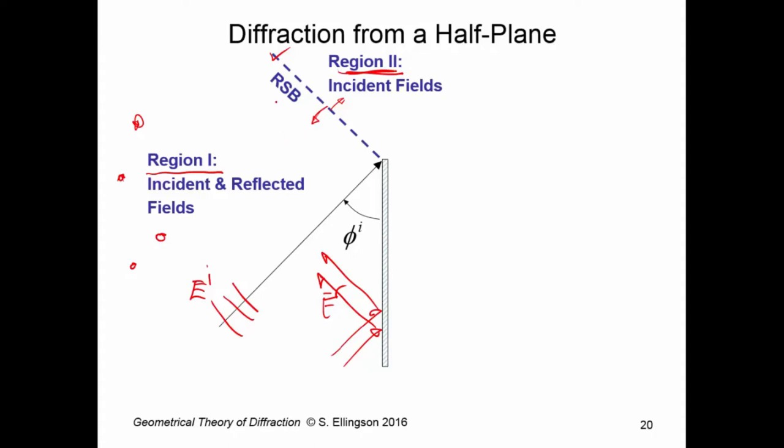So on this side of the reflection shadow boundary, we have both incident and reflected fields. On this side of the shadow boundary, we have only incident fields. We go a little bit further, and we see there is a point at which the incident field is no longer present. So over here, we have incident field. On this side, we have no incident field. This line is referred to as the incident shadow boundary. So we have two shadow boundaries that emerge, the reflection shadow boundary and the incident shadow boundary.